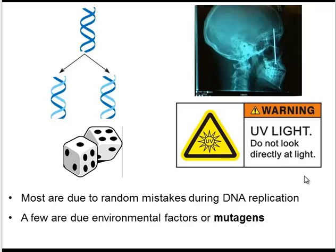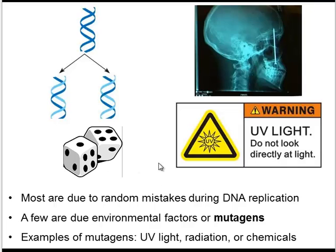However, this accounts for only a few of the mutations in DNA — again, most of them are random. Examples of mutagens include UV light, radiation, and certain carcinogenic chemicals. And that concludes our explanation of different types of mutations and how they can occur in the cell.